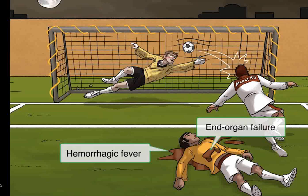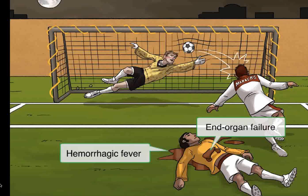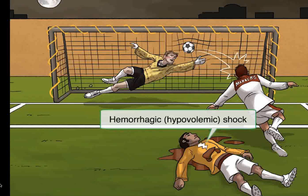Unfortunately, a lot of cases of filovirus infection, whether it's Ebola or Marburg, are eventually fatal, which is why the player looks a little dead in the eyes. Death usually occurs as a result of severe blood loss leading to hypovolemic shock, and can occur within days of showing symptoms. We'll symbolize shock with this lightning bolt on the opposing player's jersey.